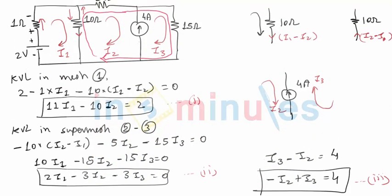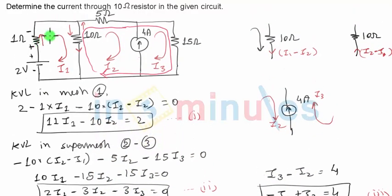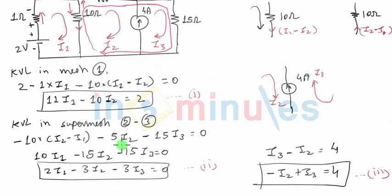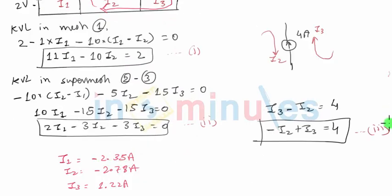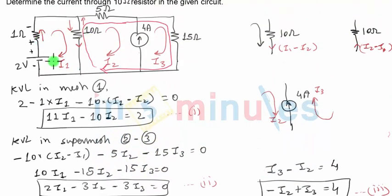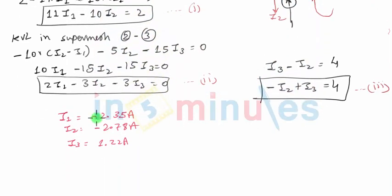Current can be negative — if the direction we assumed is opposite to the actual direction, the value will come out negative. For example, I1 is minus 2.35 amperes assuming clockwise direction; if we had assumed anti-clockwise, we would have gotten plus 2.35. So positive current in the first loop flows in the anti-clockwise direction. In the beginning we always assume clockwise directions, and based on that we get positive or negative values.